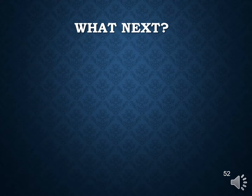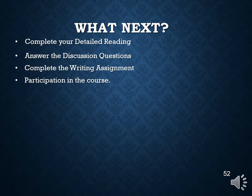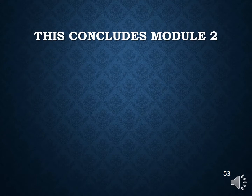So now, what's next? This module covered a lot of information — Chapters 3, 4, 5, and 6 — but ultimately this is a critical component of conducting research. Moving forward, we want you to complete your detailed reading, answer the discussion questions, complete the writing assignment, and continue participating in the course. This concludes Module 2 of KINE 5301.